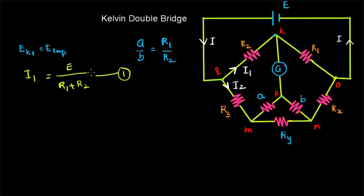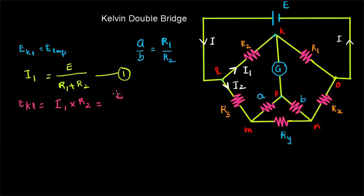Now we have to find E_KN. Since we have found the current I1, E_KN will be I1 multiplied by R2, which equals E multiplied by R2 divided by R1 plus R2. This is a potential divider rule. Let us call this equation number 2.